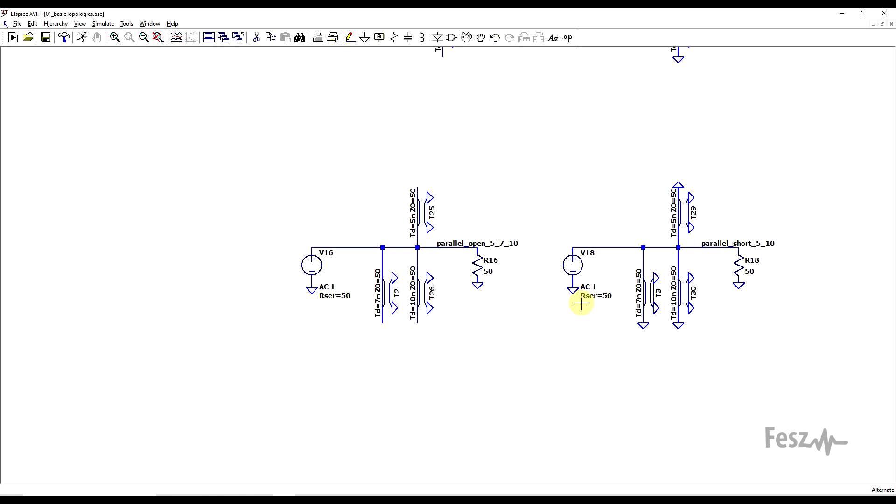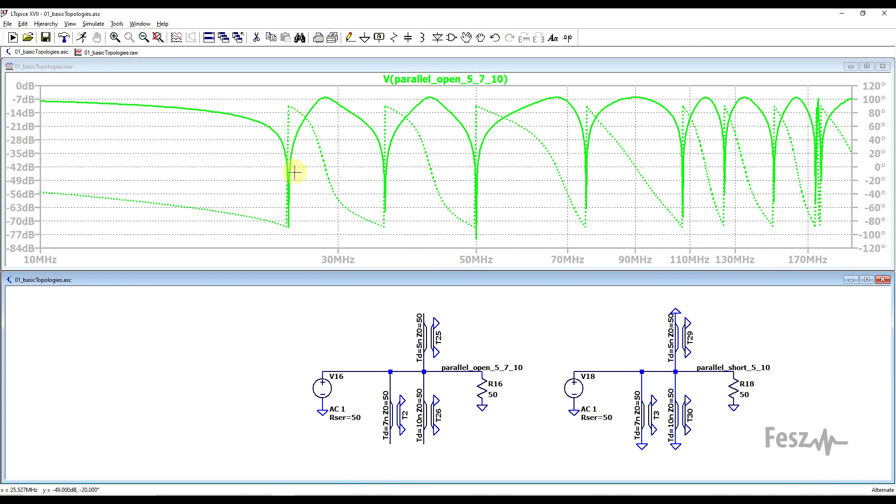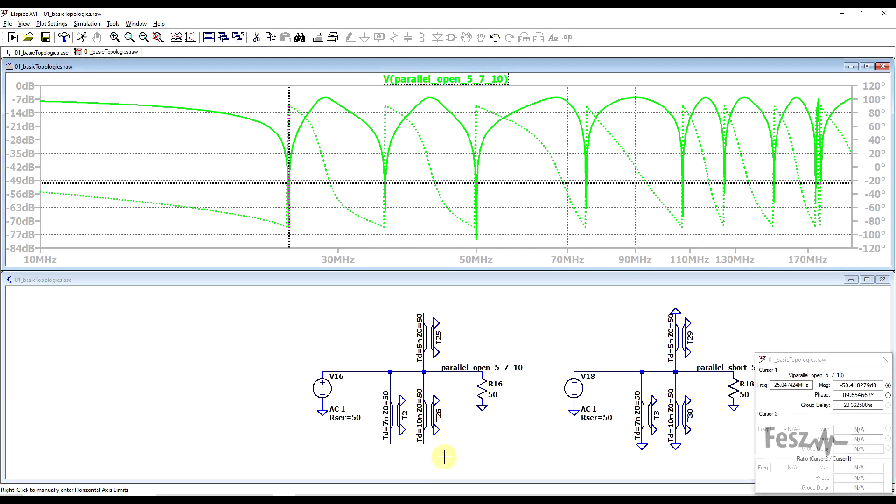Now you can add more than two stubs, so this filter also works with three or more. As long as there is enough separation in between the resonance frequencies, you will get a clear response. So when I also add an extra 10 nanosecond line, this is the response we're getting. We have an extra dip at around 25 MHz, corresponding to the quarter wavelength of the 10 nanosecond line.